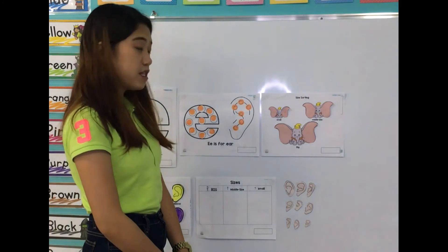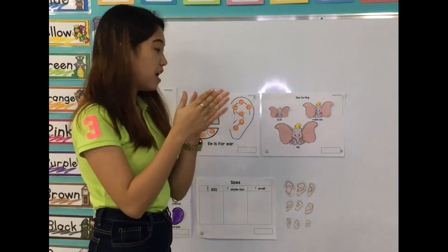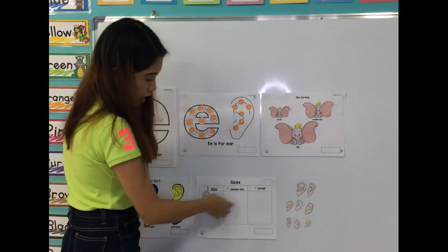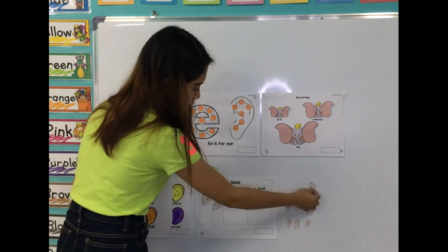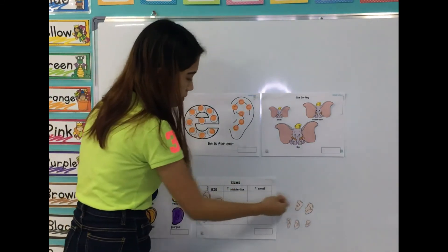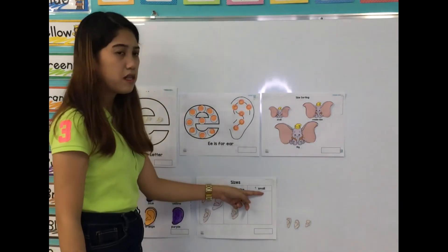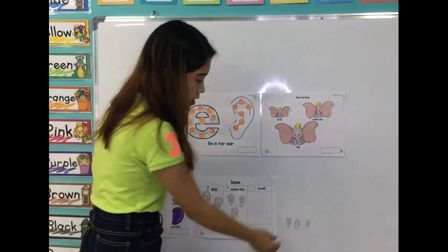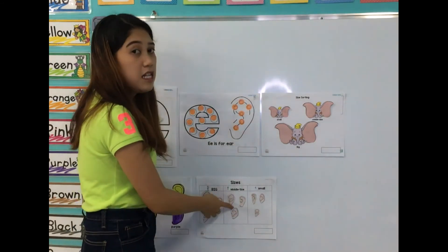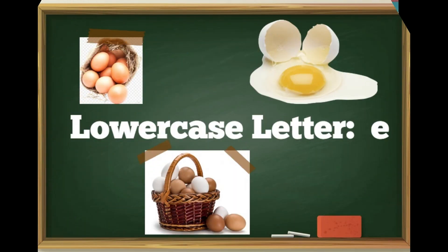And how about we sort the sizes? The big, middle size, and small. Big, middle size, and small. How about the big ear? Paste on the left side. Paste on the big ear. And how about the middle size? This is the middle size ear. And how about the small ear? Where is the small one? This is the small ear. The big, middle size, and small.